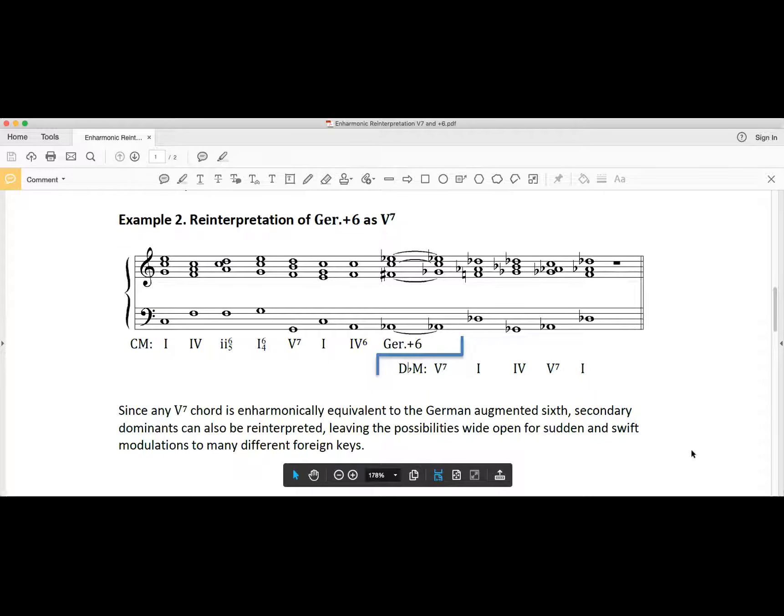Look at example two, this is from the enharmonic reinterpretation 5 7 and augmented sixth guide. What we see here are actually the chords that are quite related to the ones we were just looking at. Notice what we've got here is a German augmented sixth chord in the key of C major.